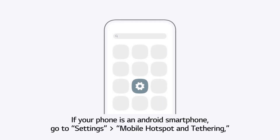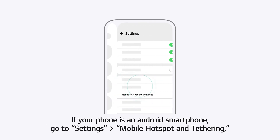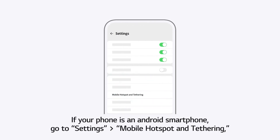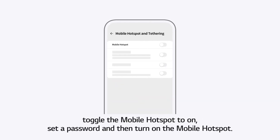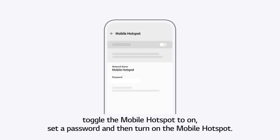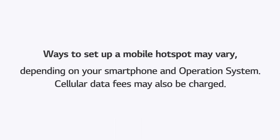If your phone is an Android smartphone, go to Settings, Mobile Hotspot and Tethering. Toggle the Mobile Hotspot to On. Set a password and then turn on the Mobile Hotspot. Note that ways to set up a Mobile Hotspot may vary depending on your smartphone and operating system, and cellular data fees may also be charged.